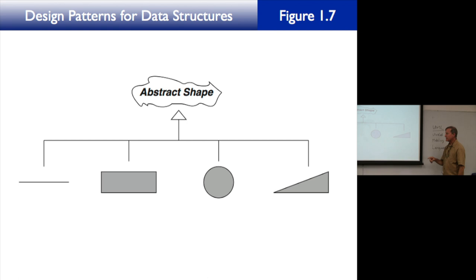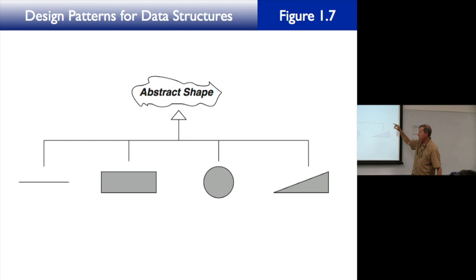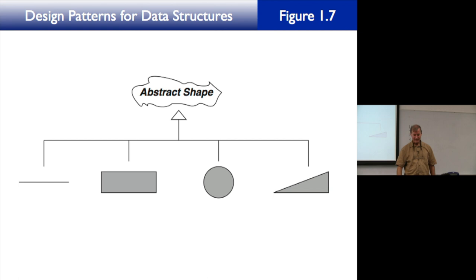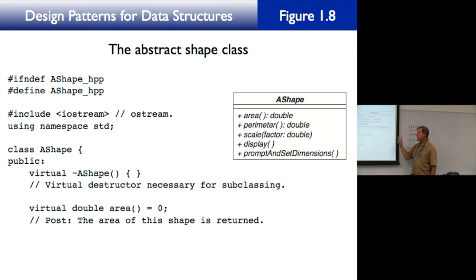Area returns a double, perimeter returns a double, scale takes a formal parameter 'factor' of type double and returns void — it changes the dimensions of the object. Display prints the shape's name and dimensions to an output stream and also returns void. In the corresponding C++ code, we have 'class AShape' with a destructor ~AShape, and each method declared as 'virtual double area() = 0' — the pure virtual syntax.